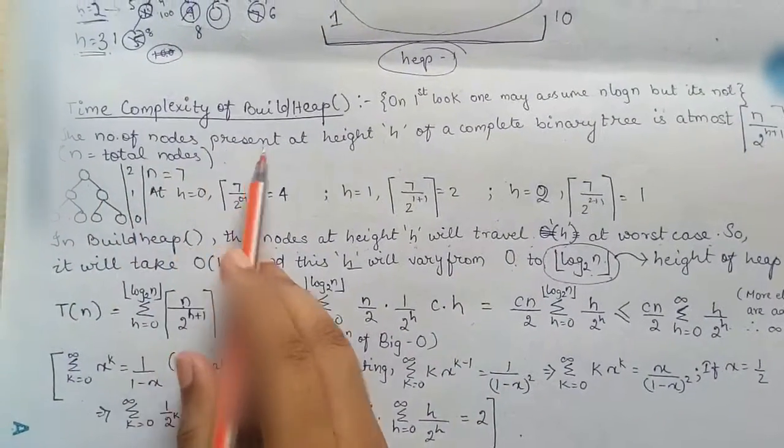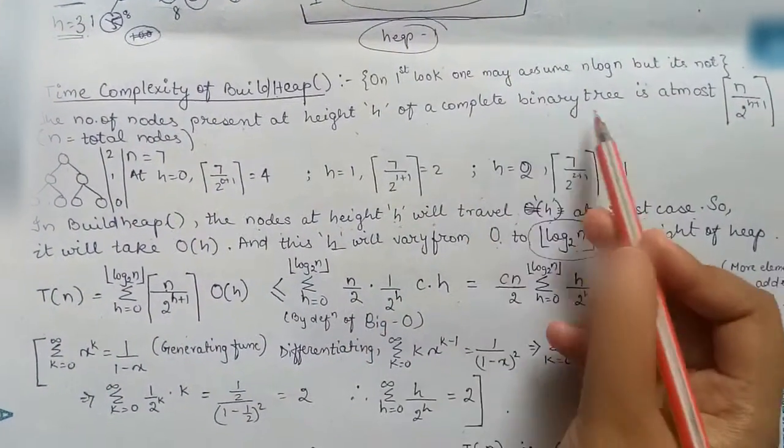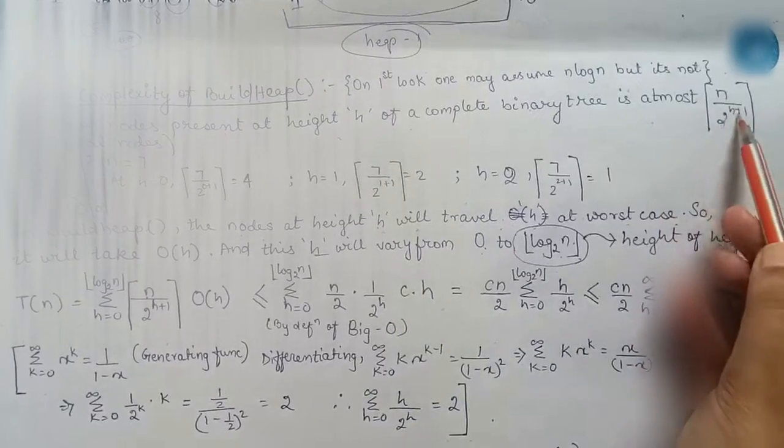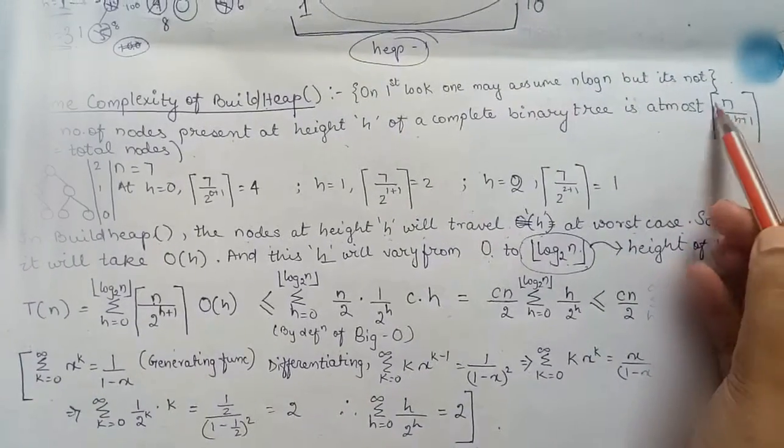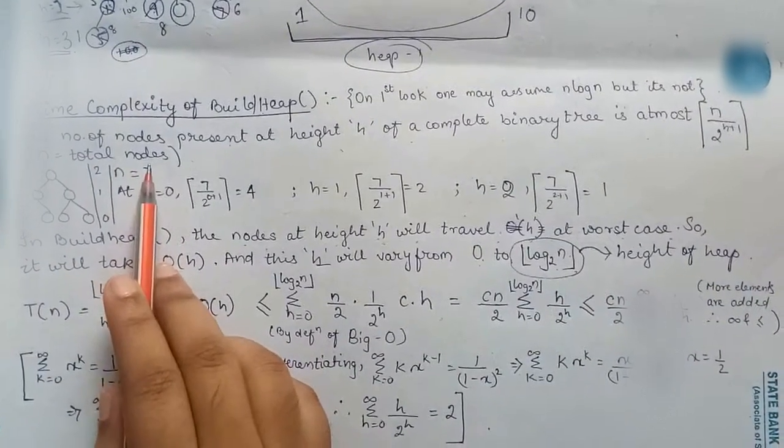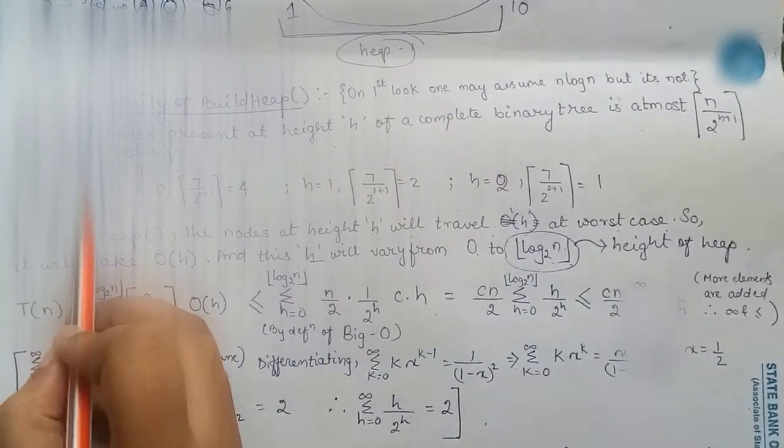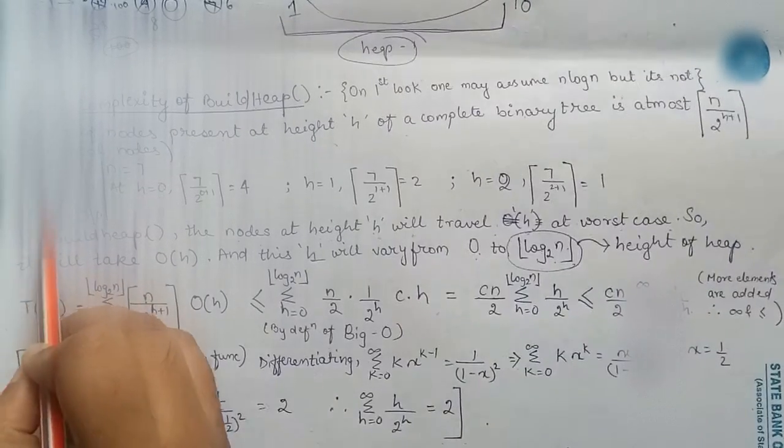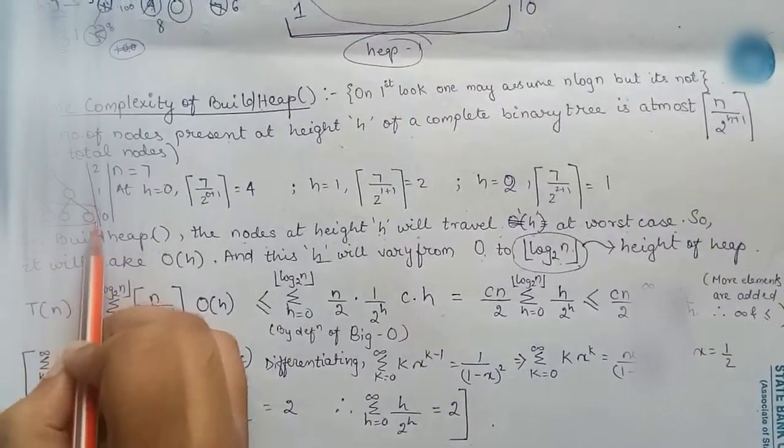Now the number of nodes present at height h of a complete binary tree is at most n by 2 to the power h plus 1 the ceiling function, where n is our total number of nodes. So we are here dealing with the number of nodes at the particular height h.